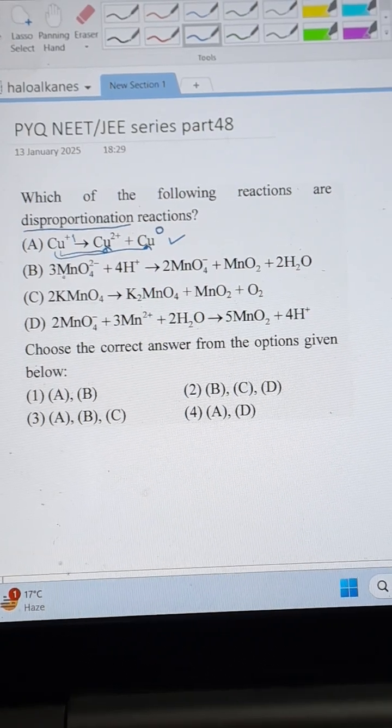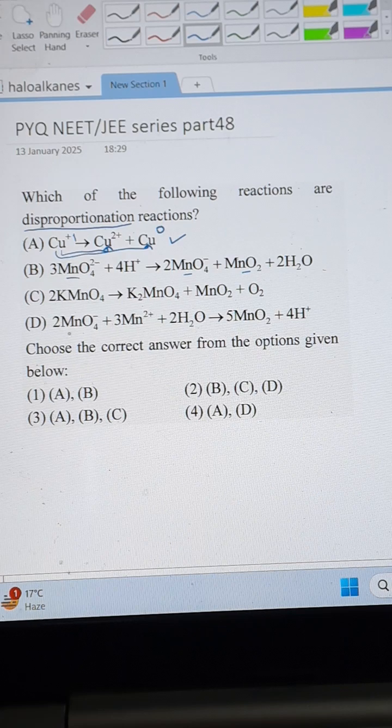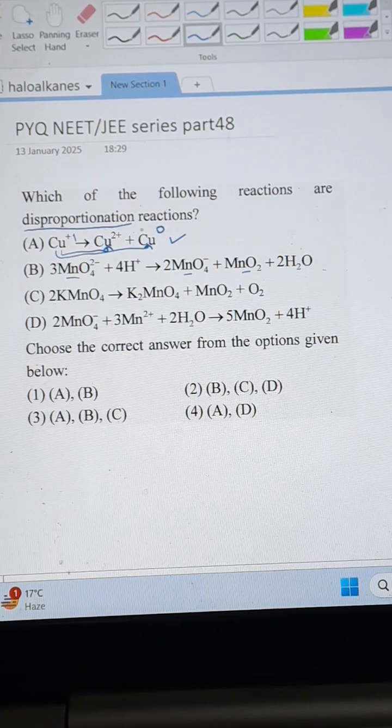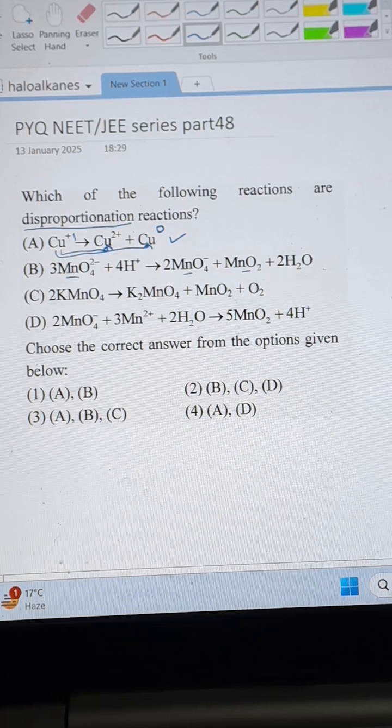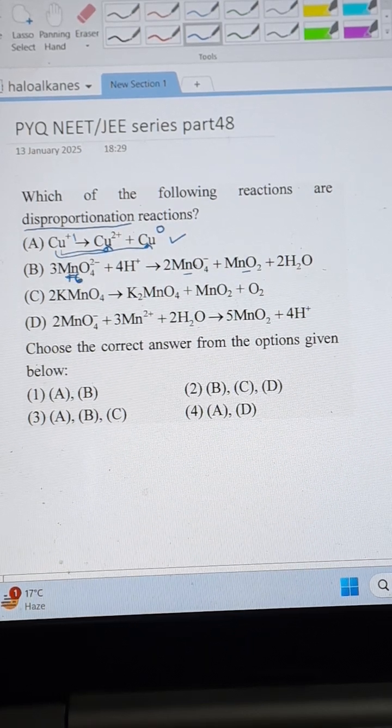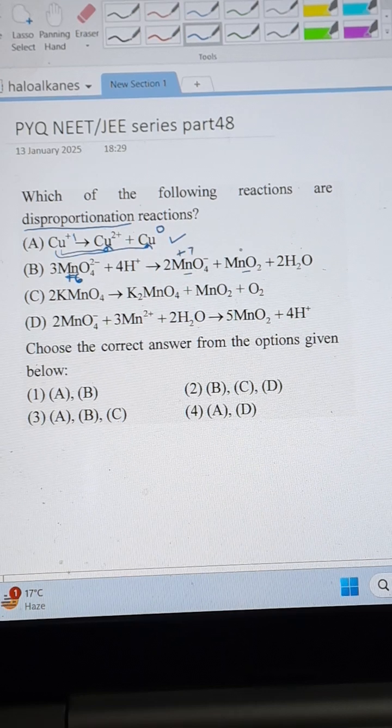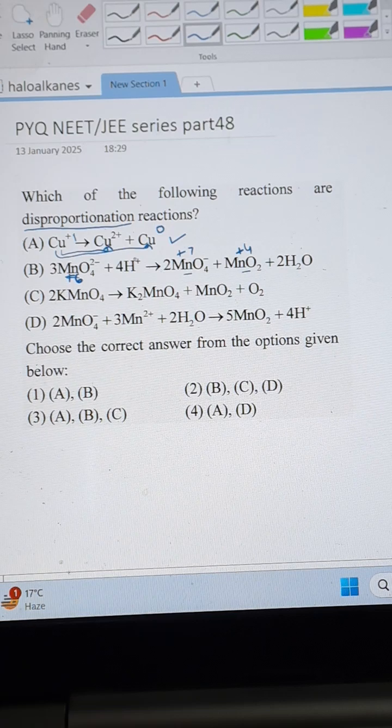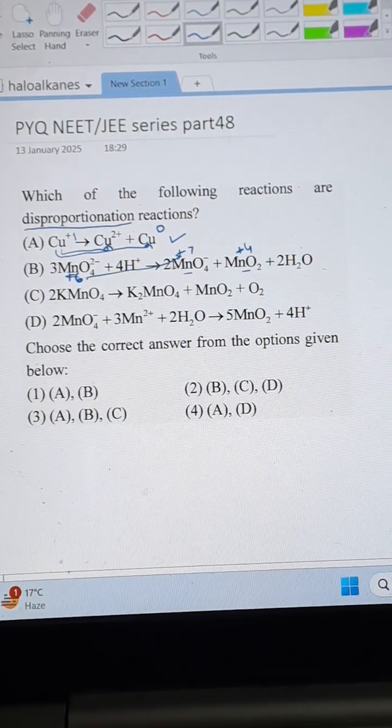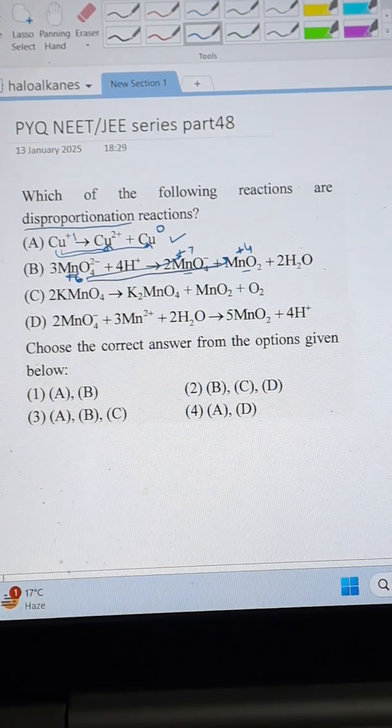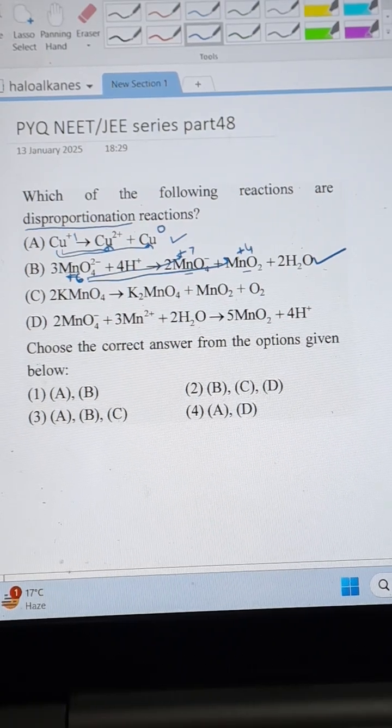So in the rest of the three reactions we have to just find the oxidation state of manganese. So I am writing the oxidation state. This is plus six and this is plus seven and this one is plus four. So plus six is undergoing two changes to plus seven and plus four. The first one is increasing and the second one is decreasing. So this is also disproportionation reaction. Oxidation and reduction to manganese.